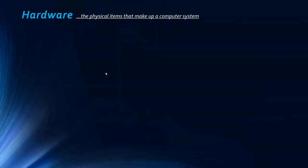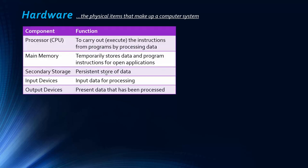Hardware really is just the physical items that make up a computer system. Here's a list of components written on the specifications. The first one is a processor — the function of this is to carry out, or execute, the instructions from programs. Its purpose is processing data. Main memory temporarily stores the data and program instructions for open applications.